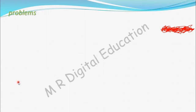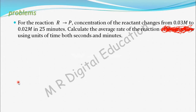See one more problem on rate of reaction. For the reaction R gives product, concentration of the reactant changes from 0.03 molar to 0.02 molar in 25 minutes. Calculate the average rate of the reaction using units of time both in seconds and minutes.